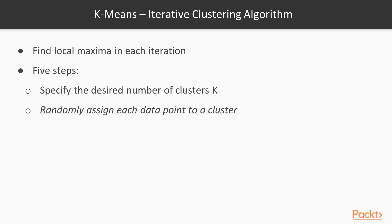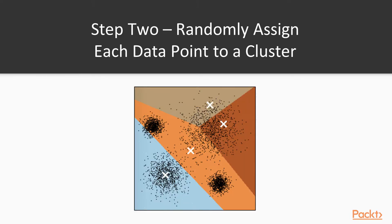Then, the second step is to assign each data point to a cluster. Since we do not have any other information at this stage, this has to be done randomly. And that's what we can see here with the colored regions representing the belonging to each of the four clusters.